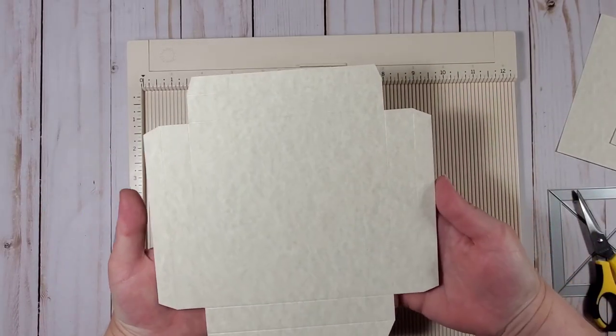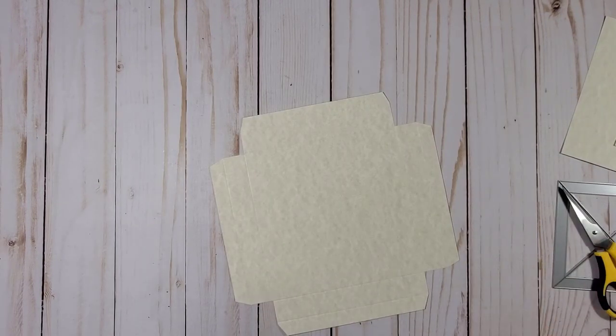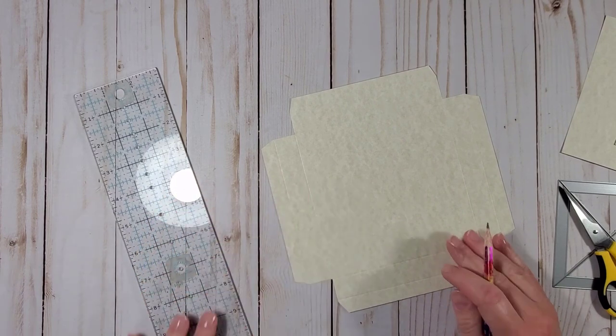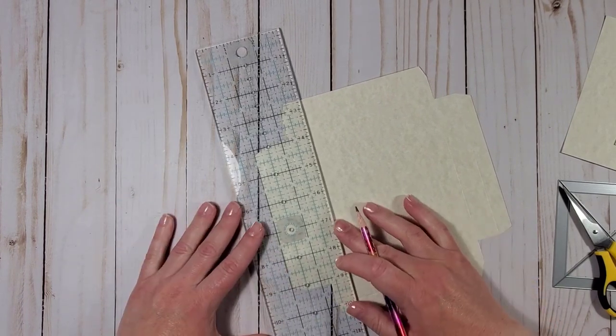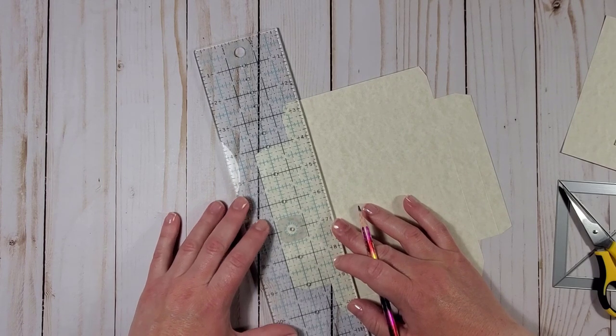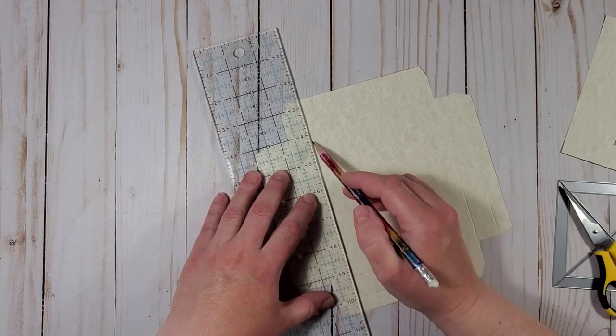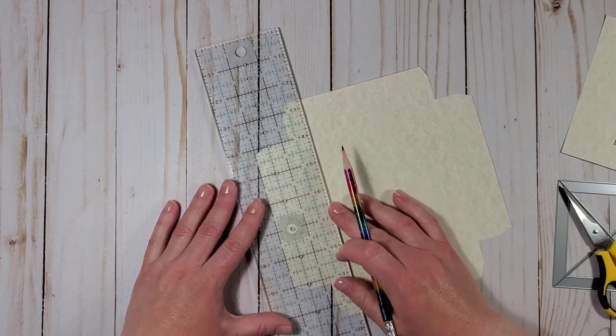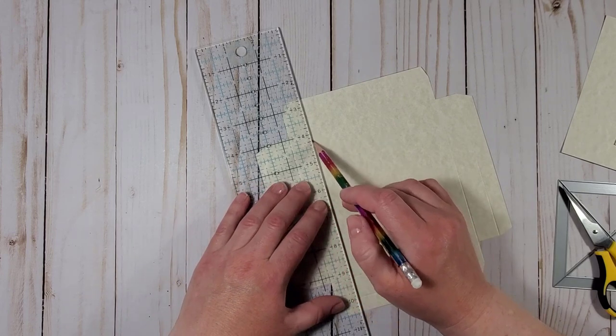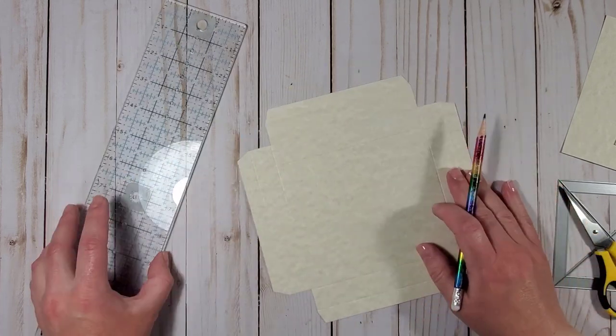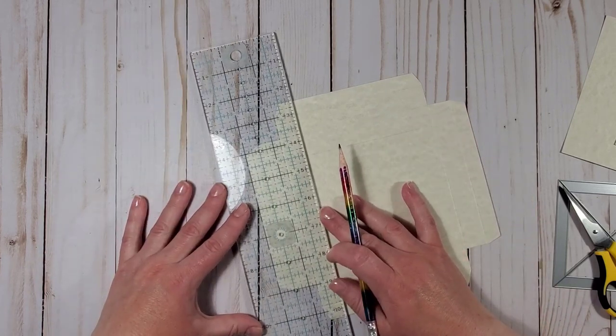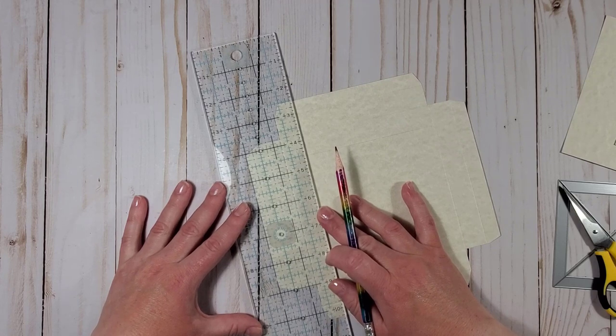This is what we have so far. Next I will take a ruler and from the second score line I will measure three quarters of an inch and draw a very thin guideline that I will erase later on as soon as I die cut the opening for the shadow box.